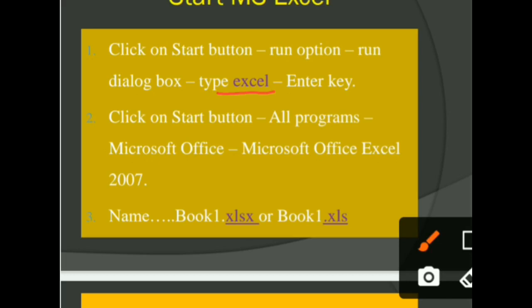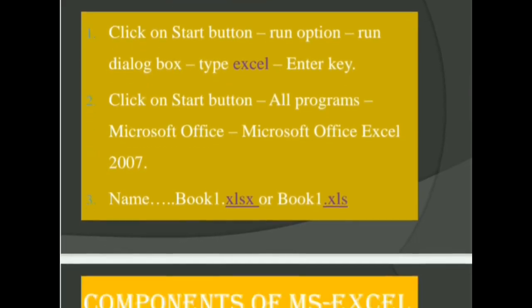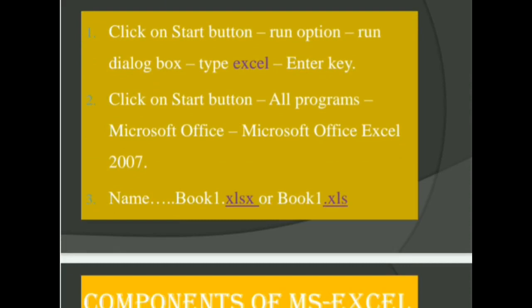Second method is, click on Start button, All Programs, Microsoft Office, Microsoft Office Excel 2007. By default, the file name is Book1.xlsx. Book1 is the name of the file and .xlsx is the extension of Excel file.